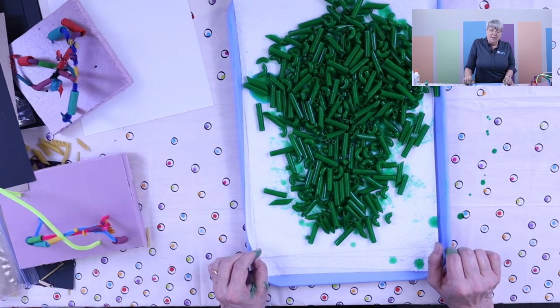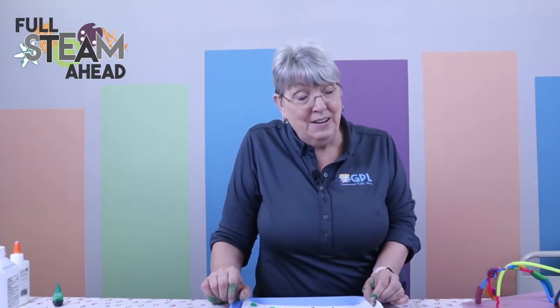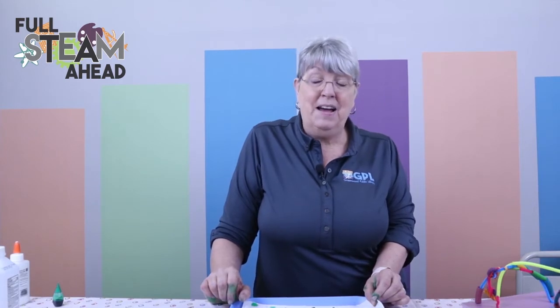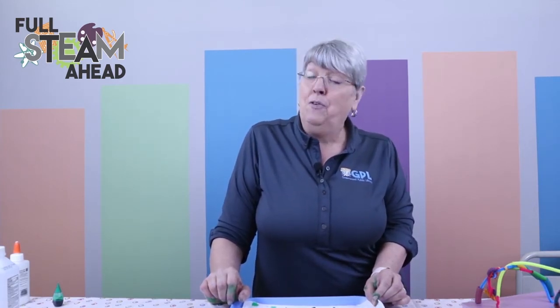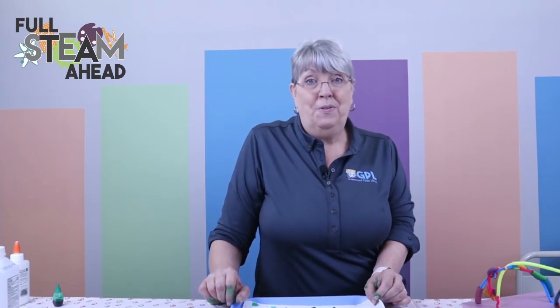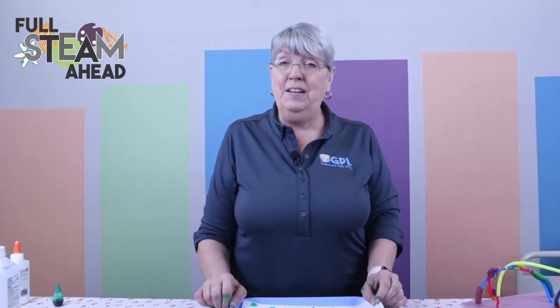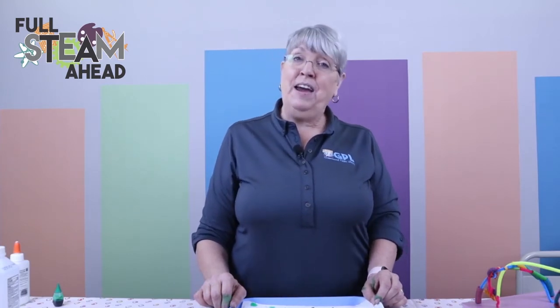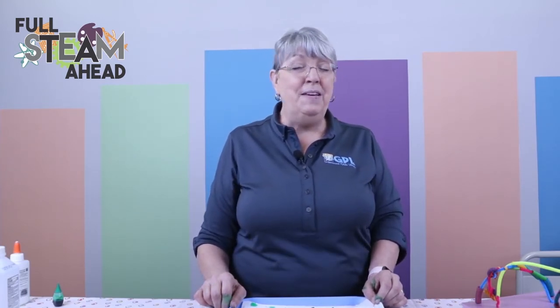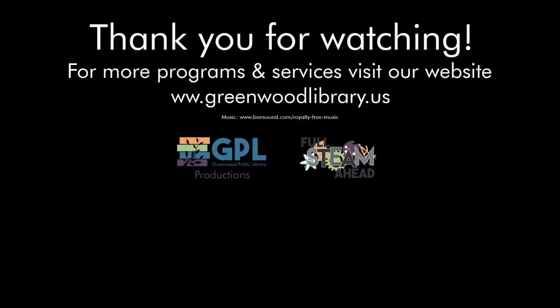Because, on the back of the food coloring box, there's all kinds of formulas that tell you how to get orange and purple. And, all those other fun colors that don't always come in a bottle. All right. So, thank you so much for joining us. Please, don't forget to stop by our website, www.greenwoodlibrary.us. And, check out all the other fun stuff we have going on. Programs, events, resources that we have to share with you. And, thank you so much for joining us today.